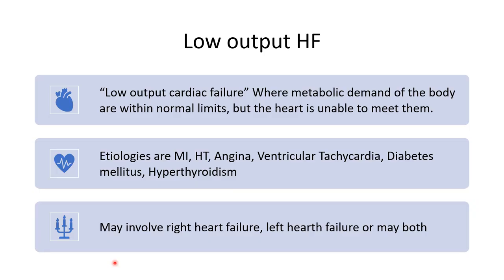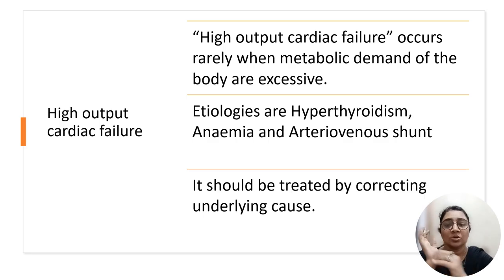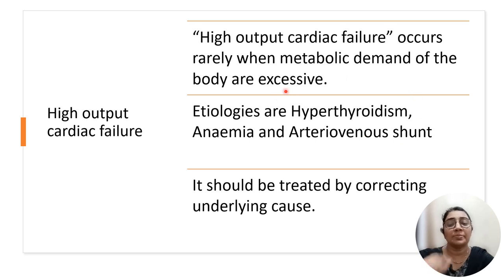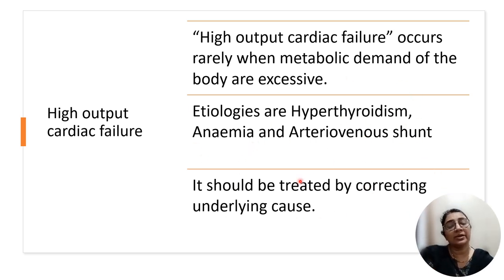In low output failure, the metabolic demands of the body are within the normal limit but the heart is not able to pump to meet the demand. Etiologies are myocardial infarction, hypertension, angina, ventricular tachycardia, and diabetes mellitus, which may involve right sided failure, left sided failure, or both. For high cardiac output failure, where the metabolic demand of the tissue is excessive, etiologies are hyperthyroidism, anemia, and arteriovenous shunt. It should be treated by correcting the underlying cause.